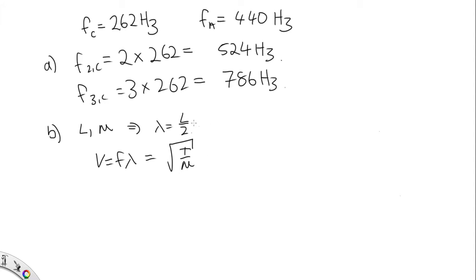So what we can do now is substitute in the length of the string here for lambda. So this is F L on 2. Now what we can do is rearrange this so that things that are constant are on one side, and the variables, the things we can change, are on the other side.